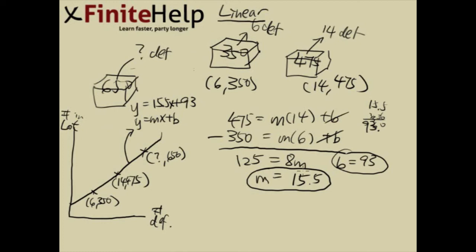So that's what the m equals 15.5 means. It means that every 15.5 increase in the lot, there's going to be one more defective. And b equals 93 meaning anything 93 and below, there's going to be zero defective.